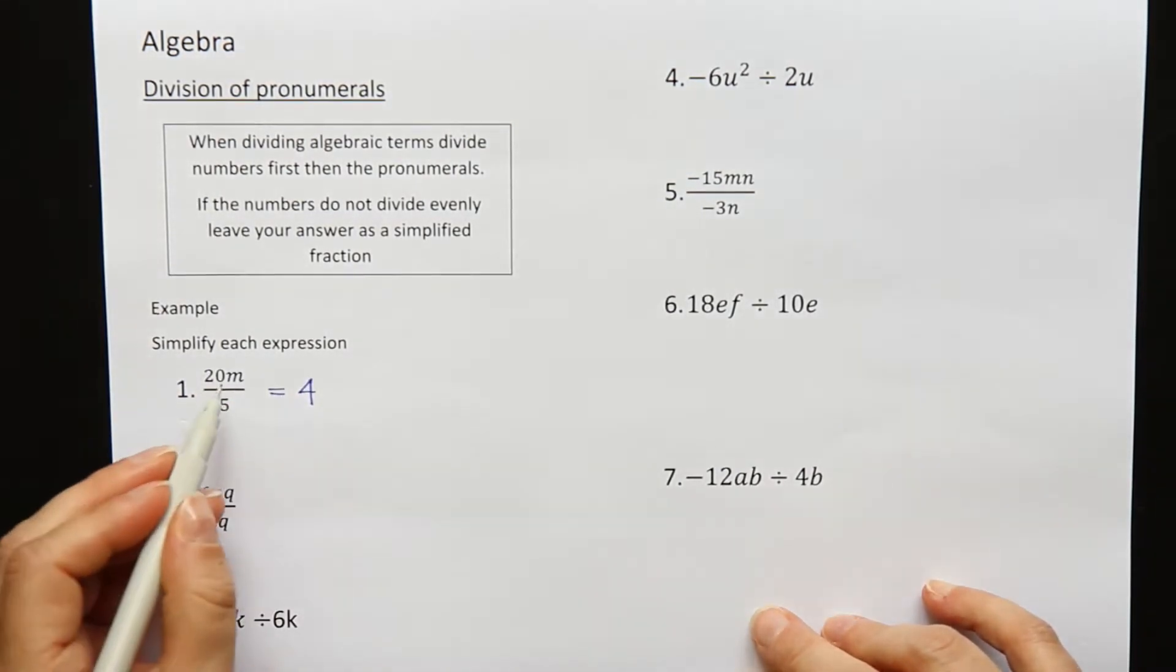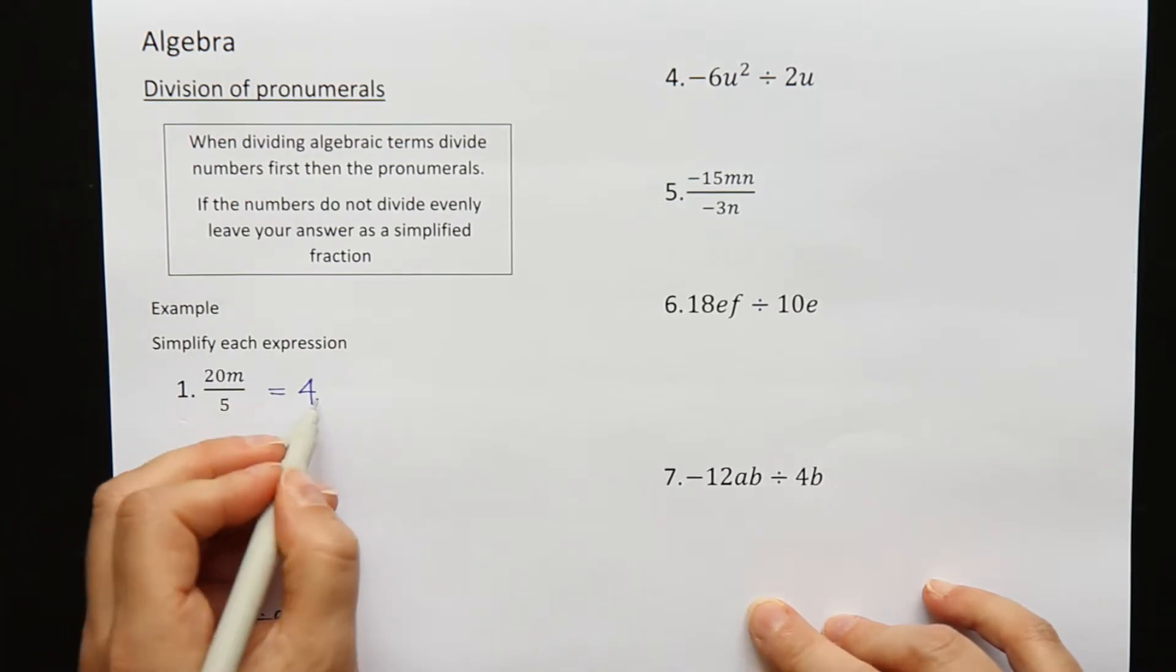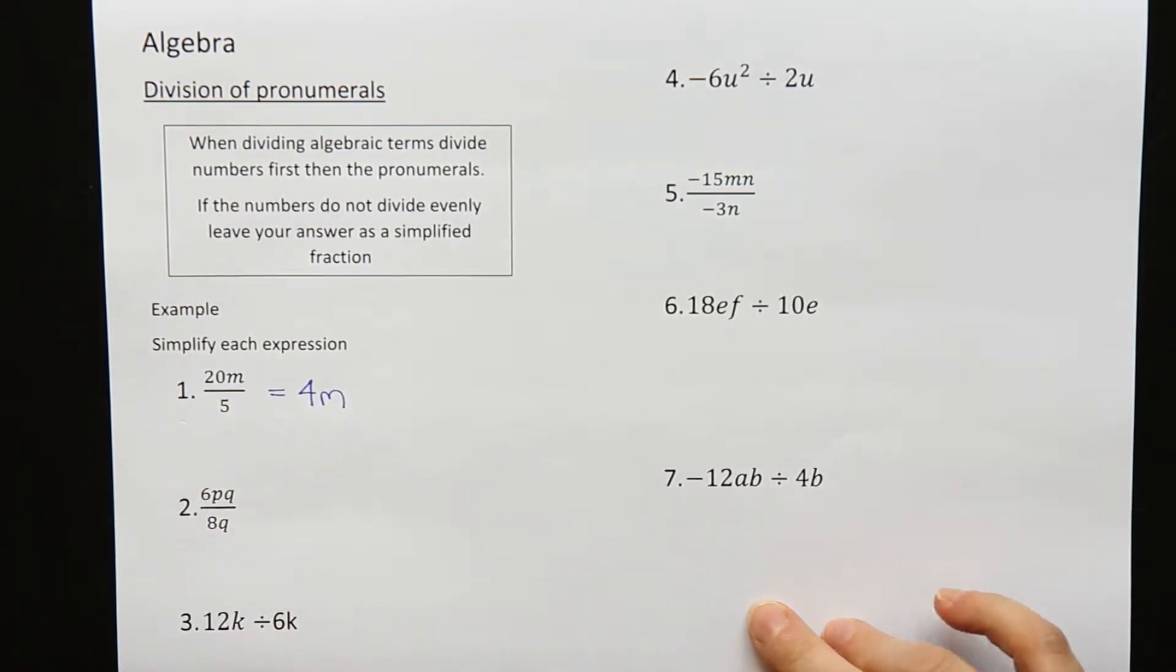And there's only one letter, an m, so it's not going to go anywhere. So it's 4m is my answer.